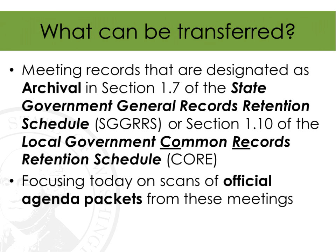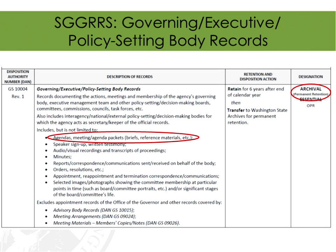We've talked in other webinars about different meeting records that can be transferred. What we're talking about specifically in this session is scans of official agenda packets from meetings of governing and/or advisory boards. The record series that apply are found in the state general schedule for state agencies and also in the Local Government Common Records Retention Schedule, or CORE, for local government. The series includes not just one type of record — it covers agendas, meeting and agenda packets, minutes, audio-visual recordings, and transcripts of proceedings. All of those are listed as archival permanent retention.